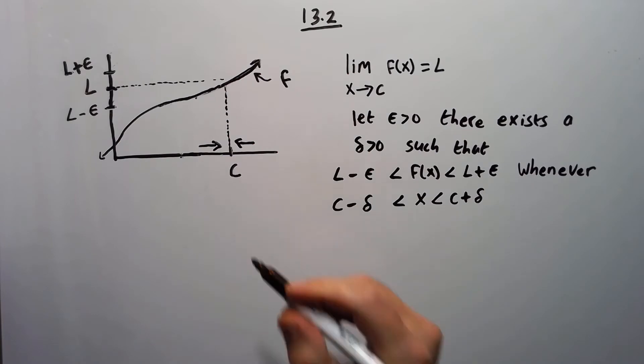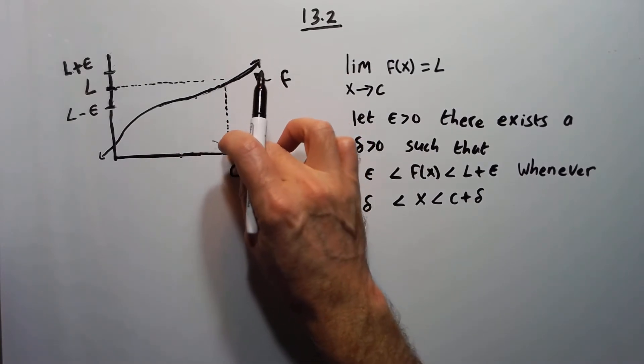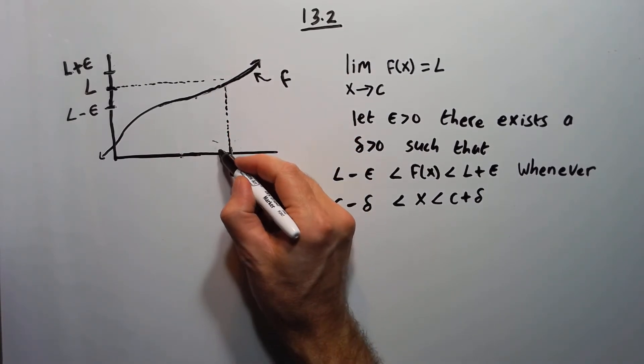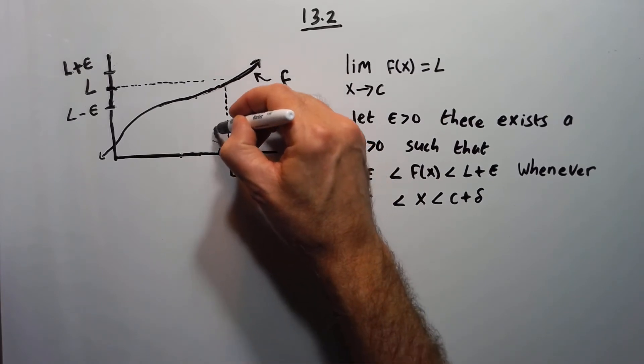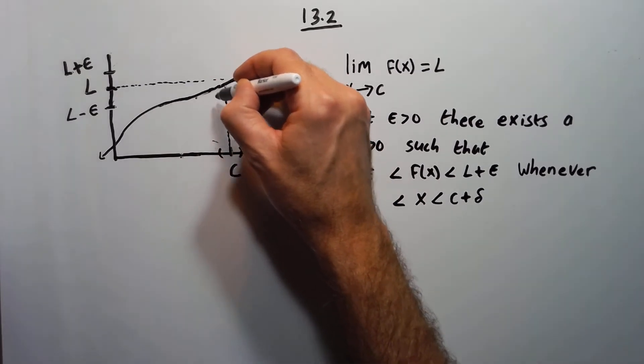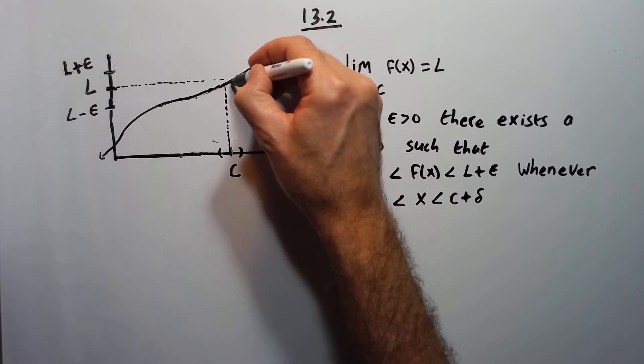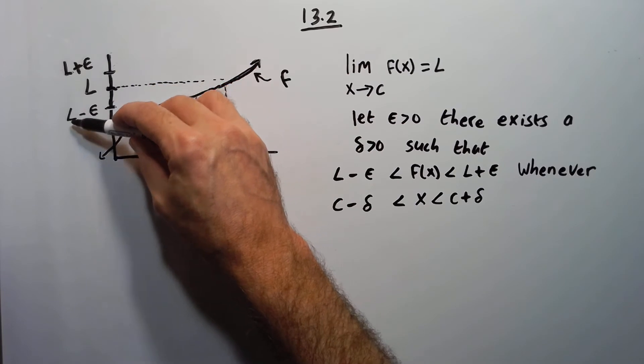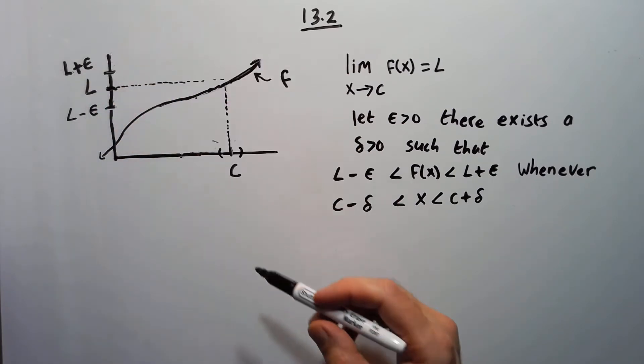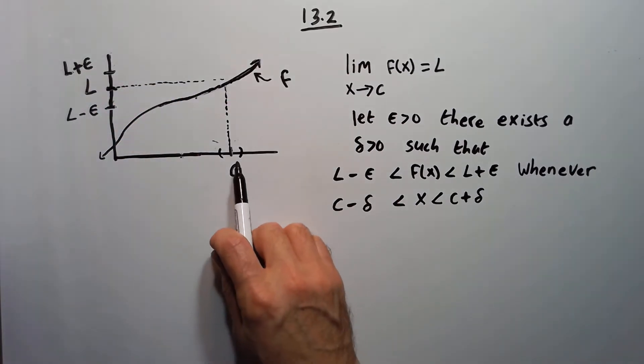So just looking at my picture here, looks like maybe there and there. If I map that guy up here, it would go up to that. If I map this one up here, it would go up to that. And both of those are within the L minus epsilon and L plus epsilon. So therefore, you could choose that distance there to be my delta. So let me write it in here.